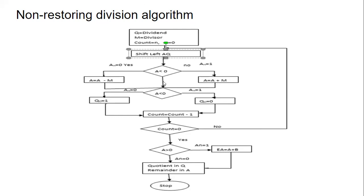Now here we are checking whether A is less than 0, that is a negative number or not. We check the sign bit of A. If the sign bit is equal to 0, then we perform A minus M — we subtract the divisor from the content of the A register.